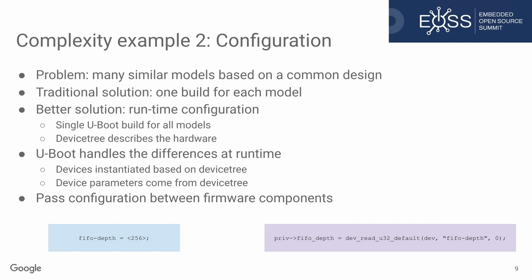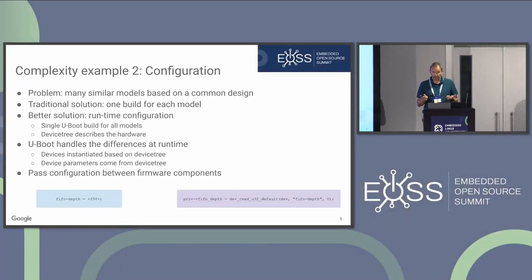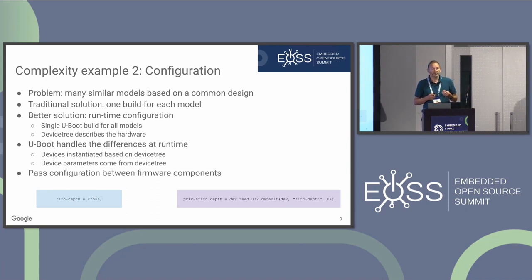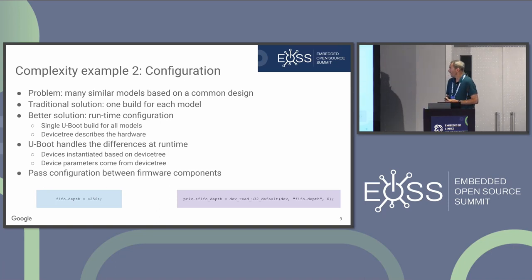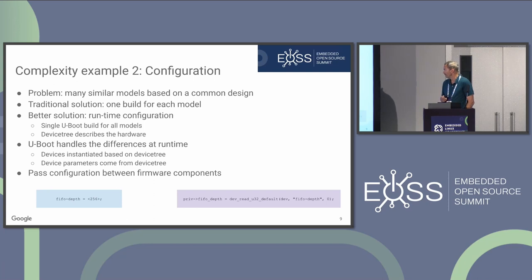Another example is configuration across multiple device models. With device tree, you can say the code is identical — the only difference between models is the device tree, because it sets the configuration and which devices are present. This is really powerful because you can build your firmware once and inject the device tree you need, maybe even in the factory. You can also pass configuration between firmware components, which I'll mention a bit later.